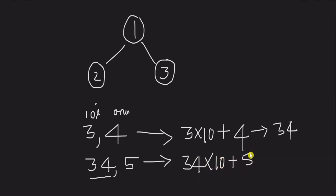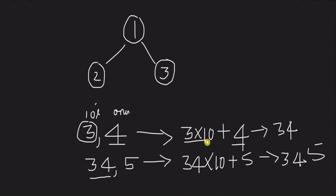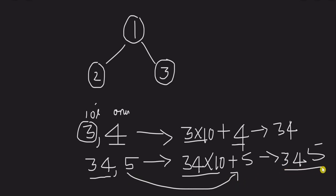If we have 34 and want to add digit 5, we do 34 × 10 plus 5, giving us 345. So the concept is: current number × 10 plus new digit. We apply this during pre-order traversal on the tree.